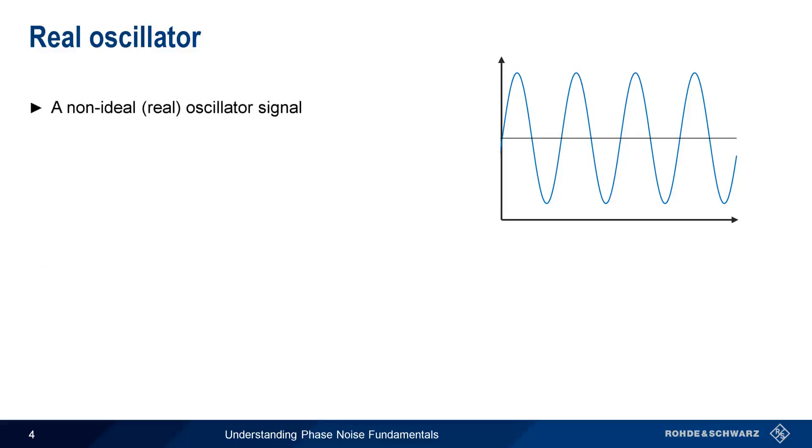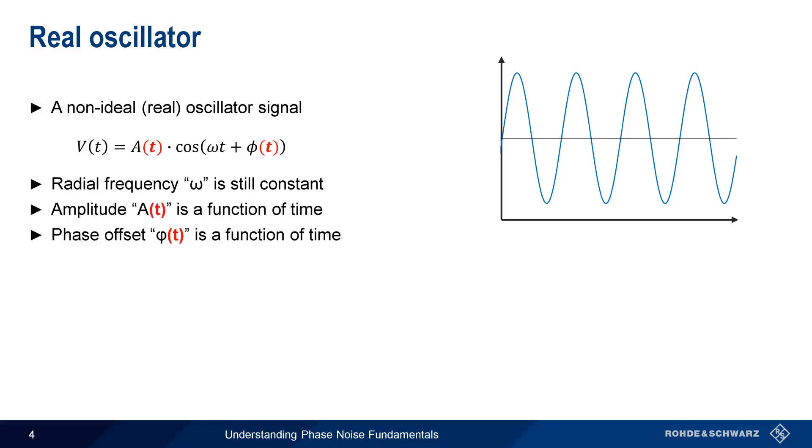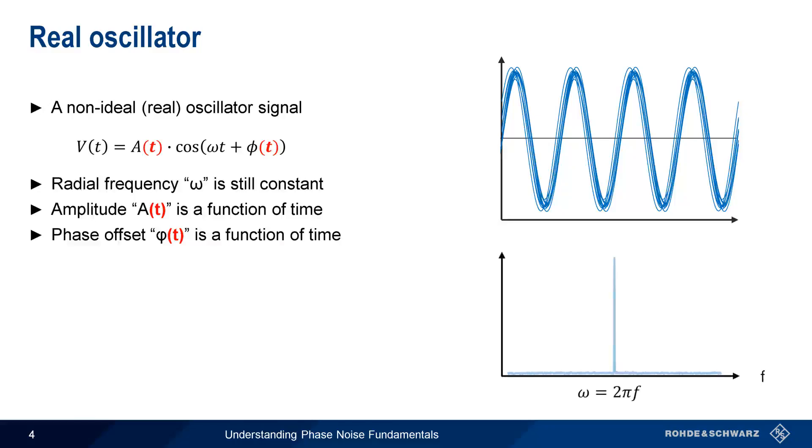A non-ideal or real oscillator signal differs from our ideal signal in two ways. The radial frequency omega is still a constant, but the amplitude and phase offset are both functions of time. In other words, the amplitude and phase of the signal are not constant. In the time domain, phase variations cause a shifting of where the sinusoid crosses the x-axis, a phenomenon often referred to as jitter. In the frequency domain, these variations create sidebands, or skirts, on either side of the carrier.